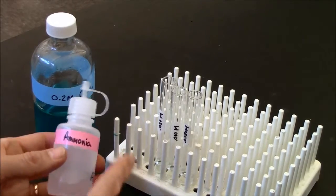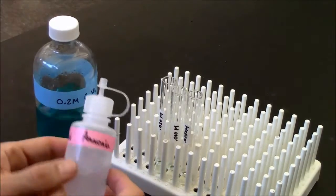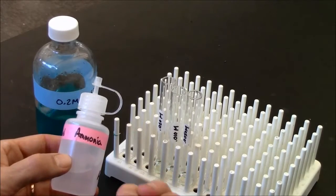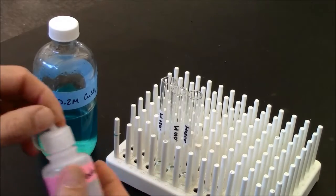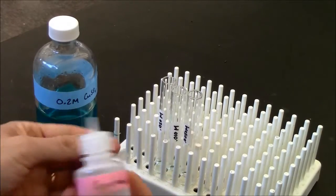Ammonia will react with copper ions to produce a very vibrant blue color. So let me show you how this works. I'm going to test for copper ions in here, and we'll look at the color that's developed.